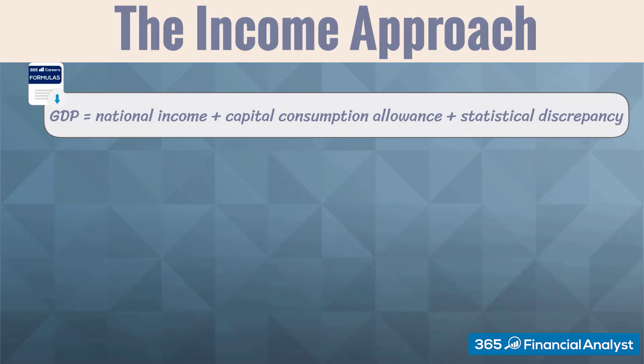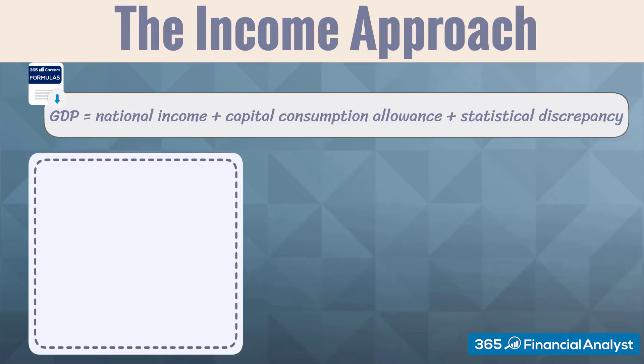GDP as per the income approach equals national income plus capital consumption allowance plus a statistical discrepancy. To understand this equation, we need to look more closely at each of its components. First, we have to define what the national income is.